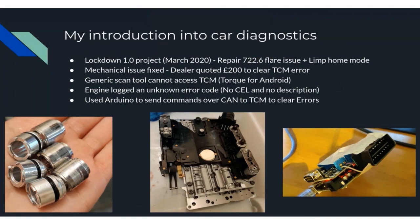The main issue is that there is currently some very cheap software — for instance on Android, there's an app called Torque which communicates with a generic scan tool. These scan tools cannot access the CAN bus network or other ECUs on the network. They can only do OBD, which is a read-only protocol with the engine's own ECU. The solution for me was to use an Arduino with a CAN connection, which allowed me to write custom CAN packets to send KWP protocol packets — a diagnostic protocol — to the transmission control module to clear the errors on it.